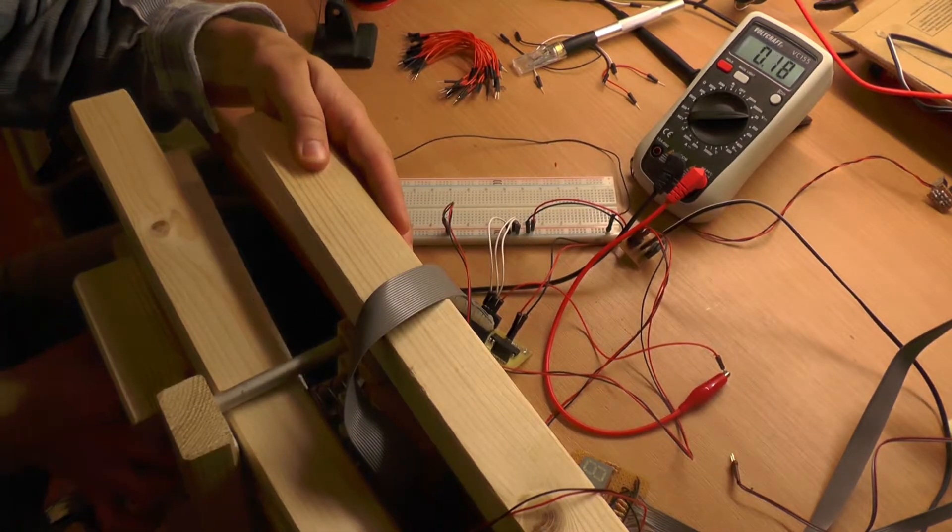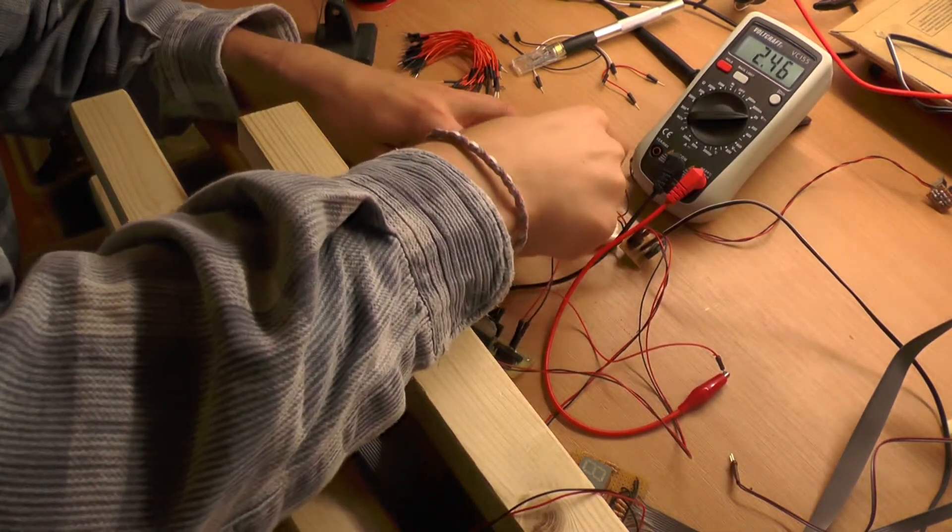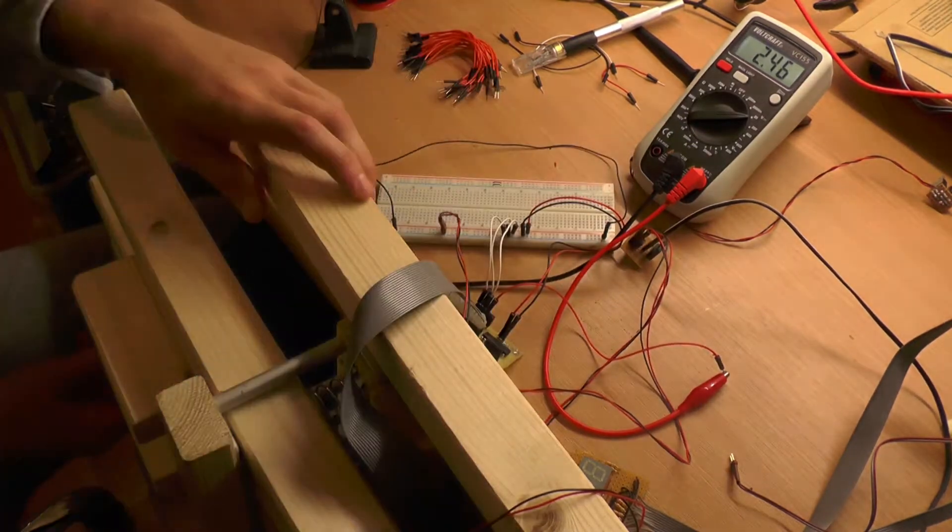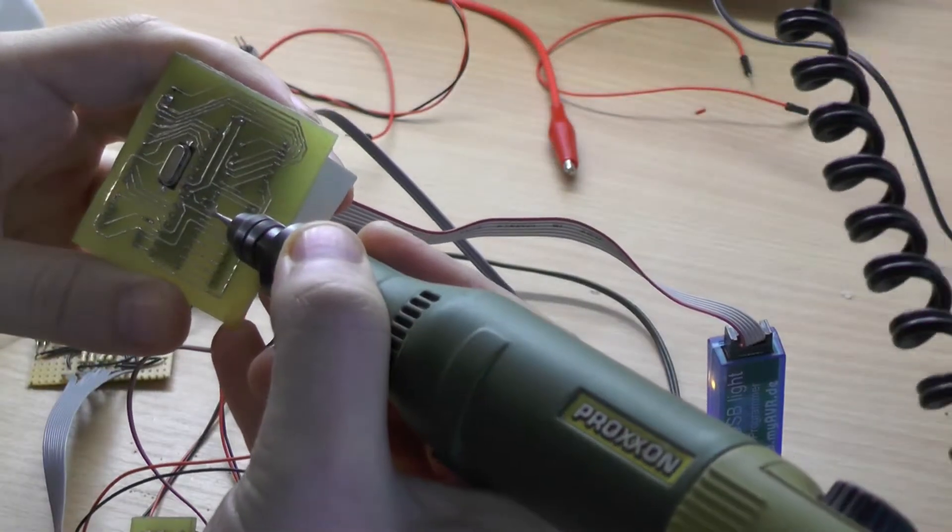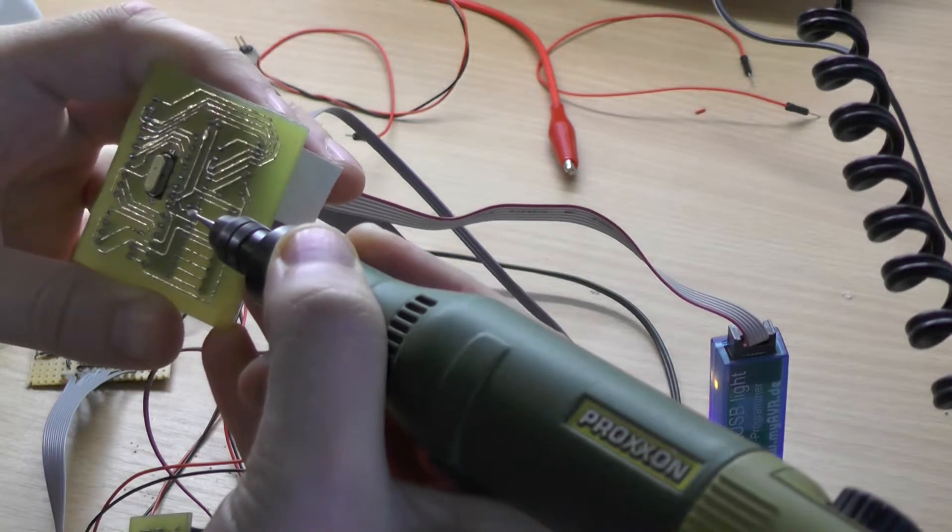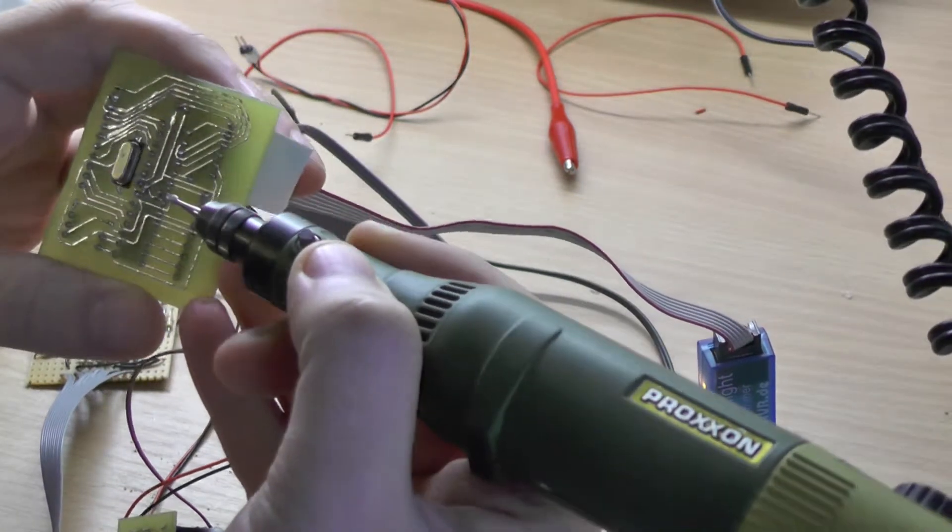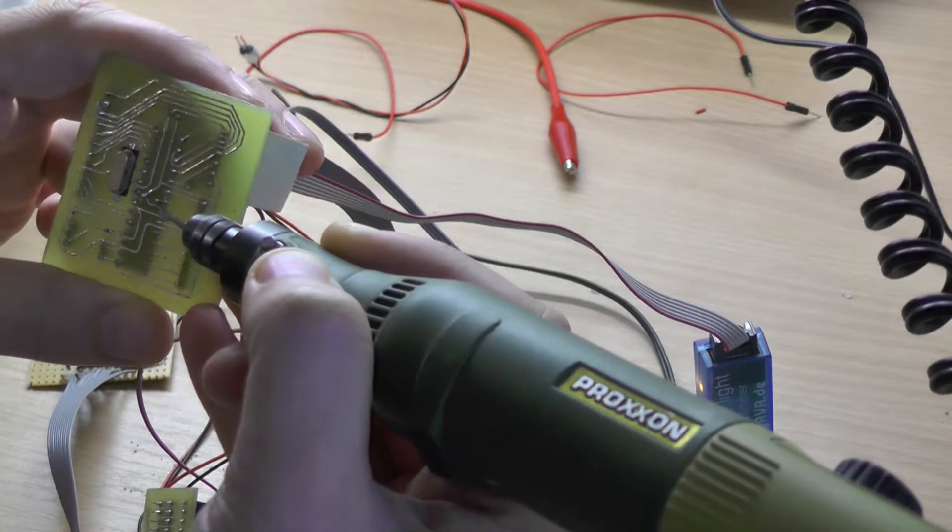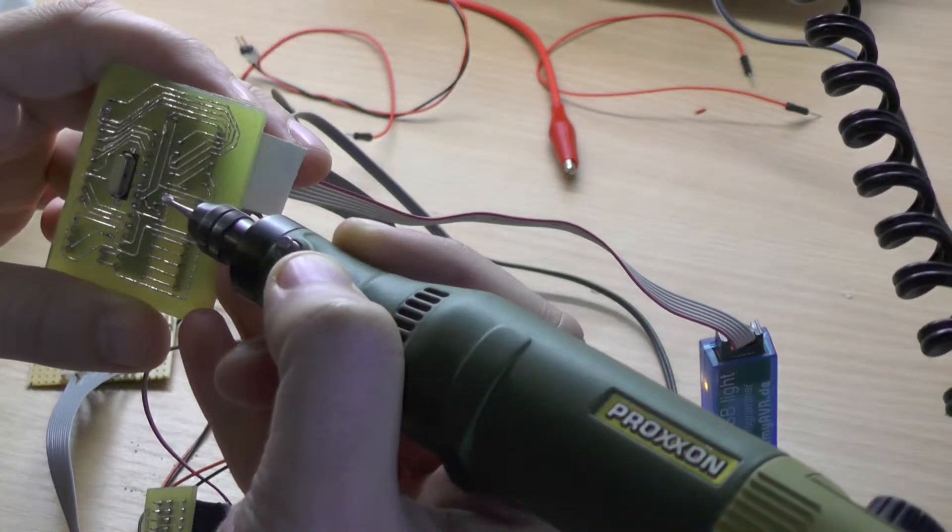This 2.5V on idle reminded me that I used the 2.5V internal voltage reference. I realized I made a mistake to connect the analog reference of the microcontroller to the 5V of the mainboard. It just has to be decoupled for noise reduction. I disconnected the trace immediately.